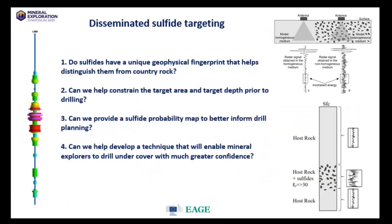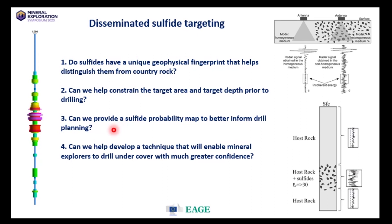So why target disseminated sulfides, and what are the questions we're trying to answer? We came into this thinking: do sulfides have a unique geophysical fingerprint detectable using the pulsed radar tool? Can they be distinguished from normal siliciclastic country rocks? Can we help constrain the target depth? And can we therefore provide a probability map to decrease the risk associated with putting a drill hole into the ground?